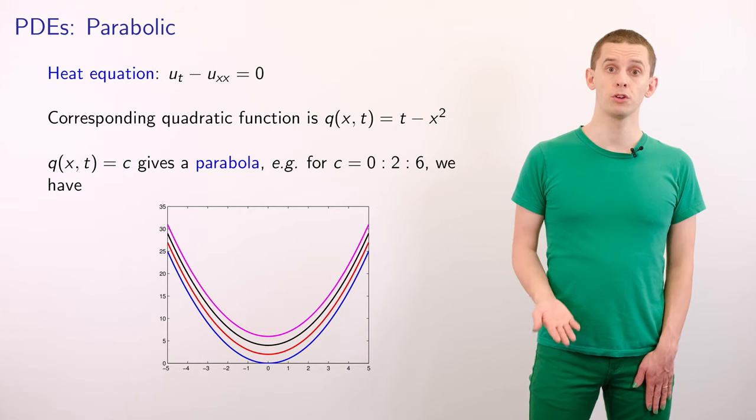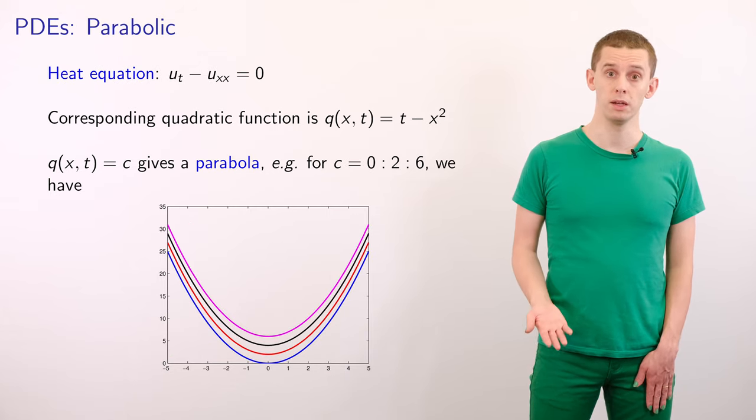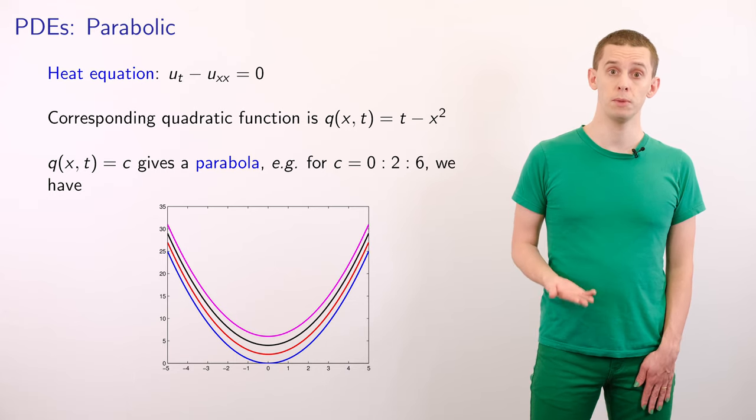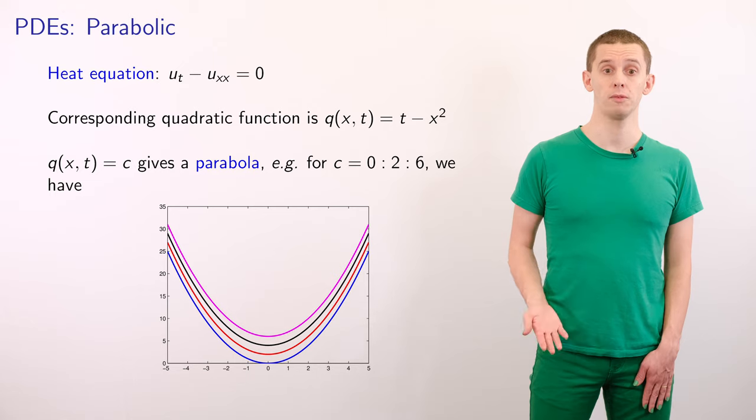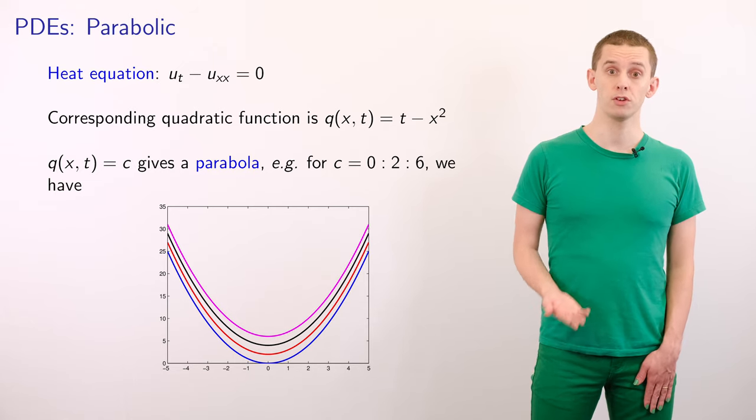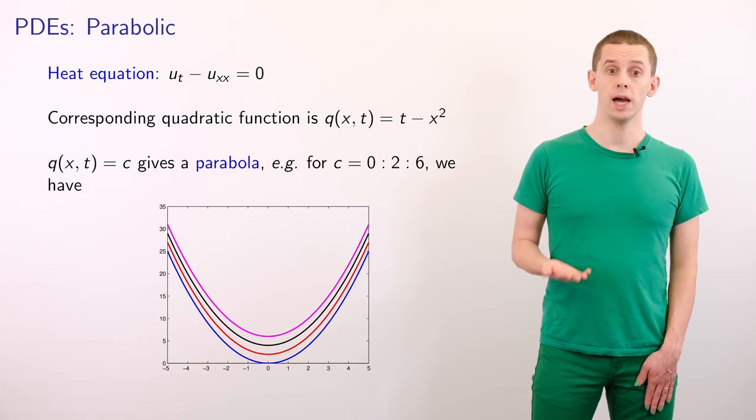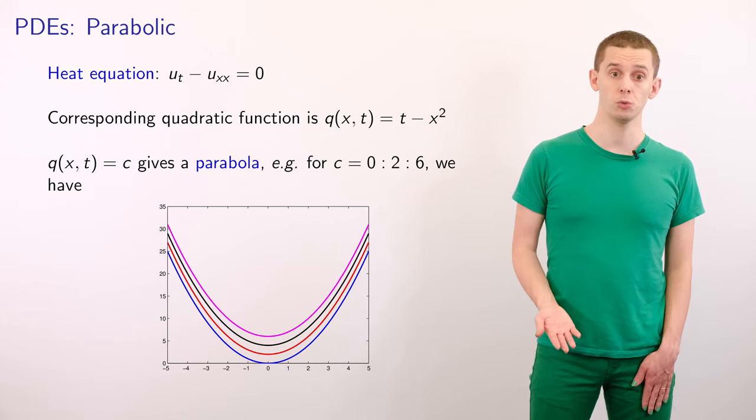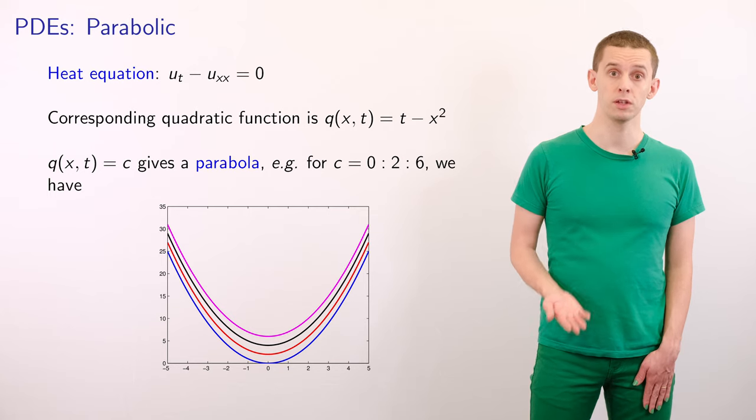Now let's look at our prototypical parabolic PDE, the heat equation, that we have is u_t minus u_xx is equal to f. And our corresponding quadratic function is therefore t minus x². And if we now look at lines of constant t minus x², then that will give us parabola.